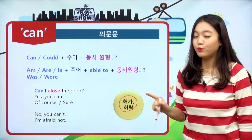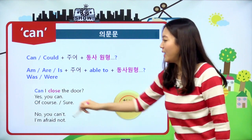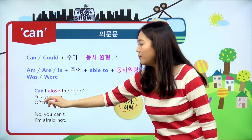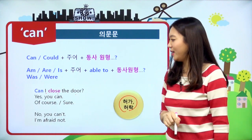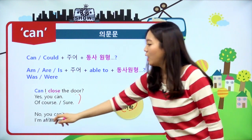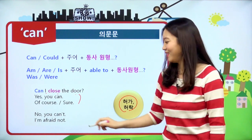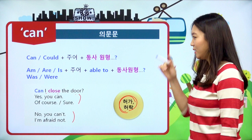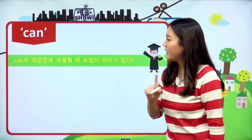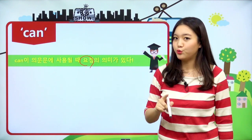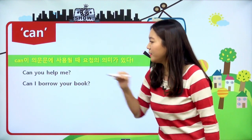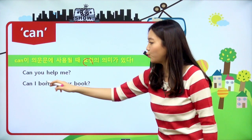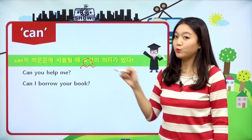허락이나 허가는 be able to로 바꿀 수 없다. 그렇기 때문에 Can I close a door? 하면 '내가 문을 좀 닫아도 되겠습니까?'라고 물어보는 거예요. 만약에 찬성이면 Yes, you can 혹은 Of course, Sure 이렇게 대답을 해도 다 긍정의 표현이기 때문에 해도 된다는 뜻이고, No, you can't 혹은 I'm afraid not 하면 부정의 의미이기 때문에 그렇게 하지 말라는 뜻이죠. 허가나 허락의 의문문은 be able to로 바꿀 수 없다. can이 의문문에 사용될 때는 요청의 의미가 있을 수도 있습니다. Can you help me? '나를 좀 도와줄 수 있겠니?'라고 요청하는 거죠. Can I borrow your book? 하면 '내가 당신의 책을 좀 빌려도 되겠습니까?'라고 요청하는 문장이 되겠어요.